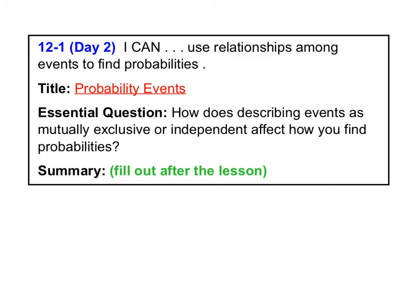Today we're going to look at lesson 12.1 day two on probability events. The essential question we're going to continue to answer is: how does describing events as mutually exclusive or independent affect how you find probabilities? Back in 12.1 day one, we talked about mutually exclusive events and how to calculate their probability. Today we're going to focus on how to calculate probabilities for non-mutually exclusive events as well as independent events.